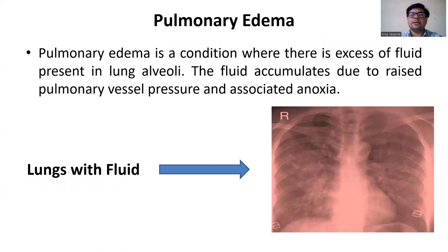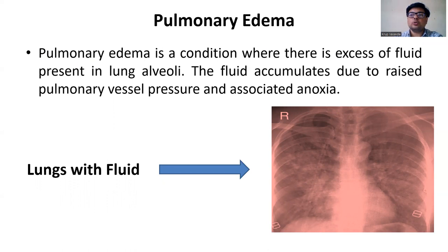Pulmonary edema is a condition where there is excess fluid present in the lung alveoli. As you can see in the X-ray below, there is fluid accumulation, and due to this fluid accumulation, there is enlargement — both lungs appear large. The fluid accumulates due to raised pulmonary vessel pressure associated with anoxia.